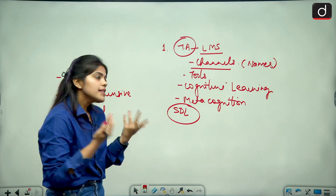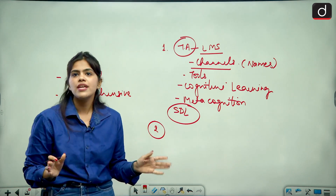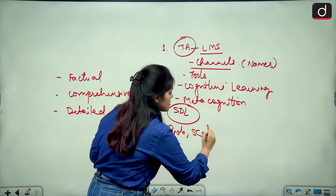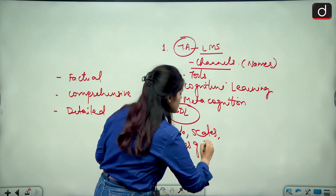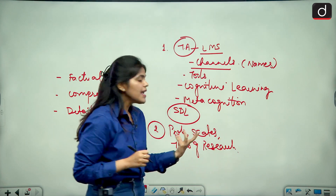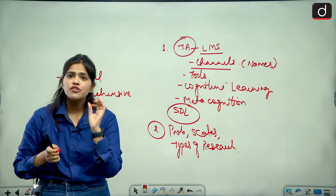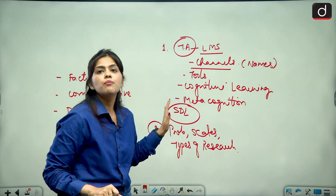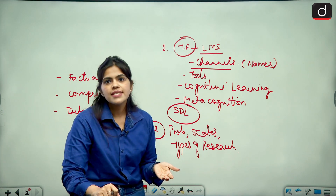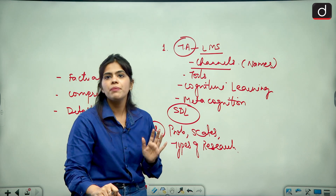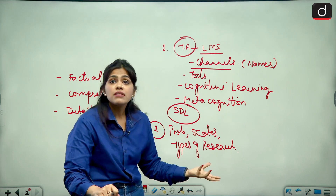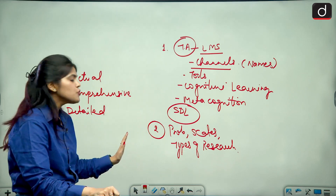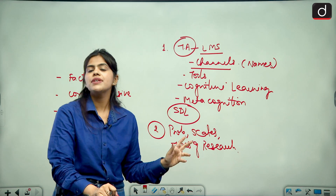Then of course there is Research — a topic that is not going to change. Probability, scales, and types of research are three very important topics, and they also asked about plagiarism this time. These topics came in almost every shift. Types of scales — nominal, ordinal — types of research, quantitative, qualitative, and probability are very, very important. Research is a topic that is always going to pay. Read as much as you can about research.